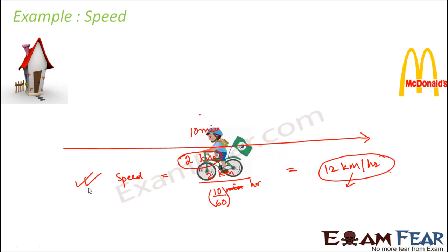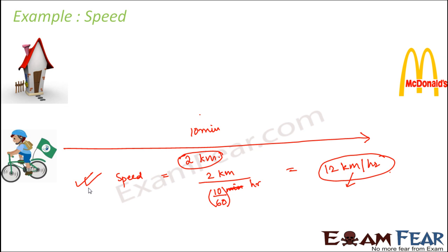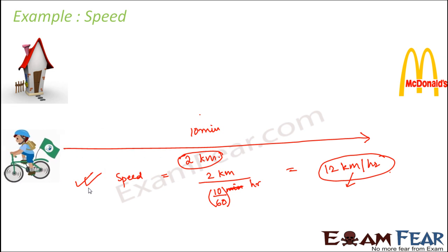Similarly, let's say the boy also comes back from McDonald's to his house. The total distance for going and coming back would be 4 kilometers. Assuming he did not stop at McDonald's — as soon as he reached, he changed his mind and came back home — and the total time he took was 30 minutes, what would be the overall speed? You can calculate it the same way: distance traveled divided by time taken. I'm leaving that as an exercise for you.